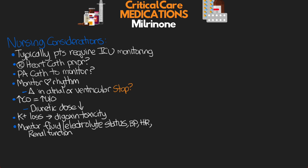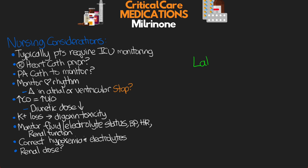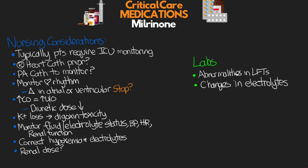Excessive decrease in blood pressure may require slowing or stopping the infusion. Correct any hypoxemia and electrolyte imbalances before beginning and during therapy. Milrinone may need to be renally dosed in patients with either acute or chronic kidney issues. For lab studies, we may see abnormalities in LFTs, and the drug can cause changes in electrolyte levels — most notably the potential loss of potassium.